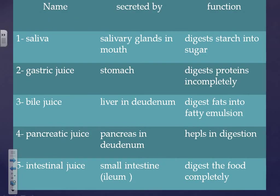Here is a summary of the digestive secretions. Saliva is secreted by the salivary glands in the mouth and digests starch into sugar. Gastric juice is secreted by the stomach and digests proteins incompletely into a semi-liquid substance. Bile juice is secreted by the liver into the duodenum and digests fats into fatty emulsion. Pancreatic juice is secreted by the pancreas into the duodenum to help in digestion. Intestinal juice is secreted by the ileum of the small intestine and completely digests the food.